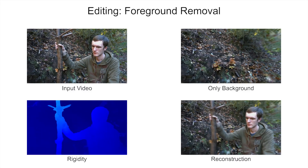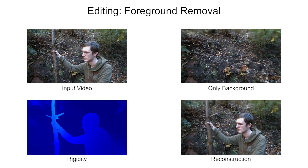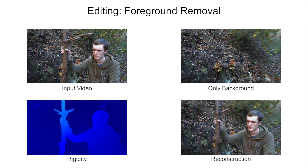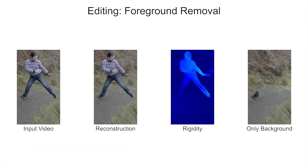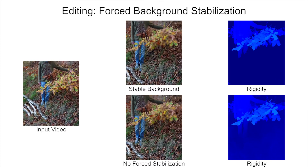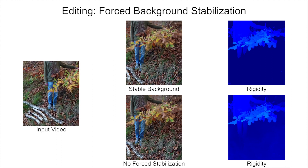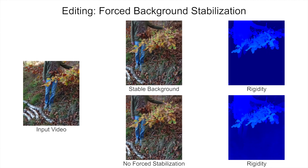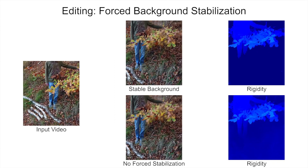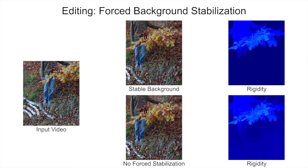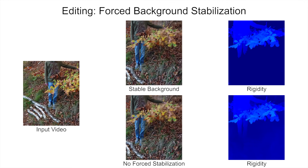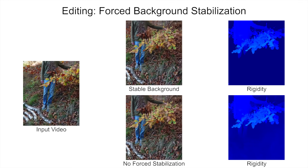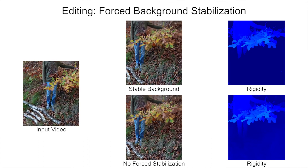Our method assigns rigidity scores to every point in 3D space. If the non-rigid foreground is sufficiently non-rigid, we can set those points to be invisible, which removes them from the rendering. We made many design choices in order to encourage the background to be stable. However, some undesired motion might still remain. In such a case, it is often possible to threshold the rigidity scores to segment foreground from background and set the motion of the background points to 0.